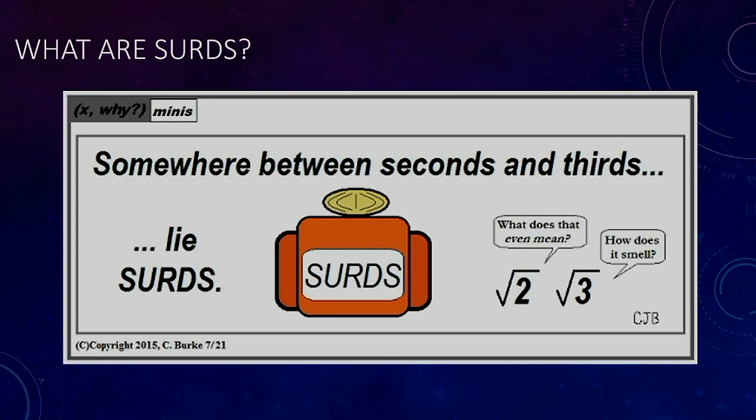Surds. What are surds? Surds are referred to as radicals sometimes and they're basically just the opposite of exponents.